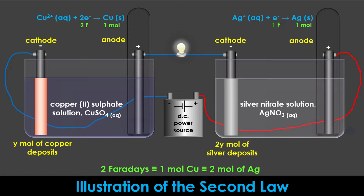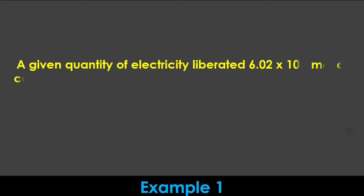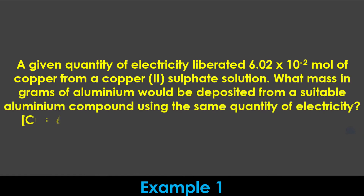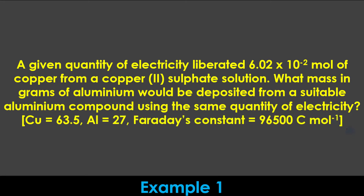Now let's look at some examples on Faraday's Second Law of Electrolysis. Example 1: A given quantity of electricity liberated 6.02 × 10⁻² moles of copper from a copper(II) sulfate solution. What mass in grams of aluminium would be deposited from a suitable aluminium compound using the same quantity of electricity? Take the relative atomic masses of copper and aluminium to be 63.5 and 27 respectively, and 96,500 coulombs per mole as the value of Faraday's constant. Since the same quantity of electricity was passed through two different electrolytes, they were connected in series, which makes this an application of the Second Law.